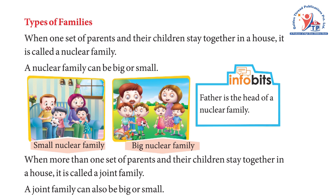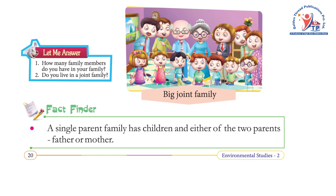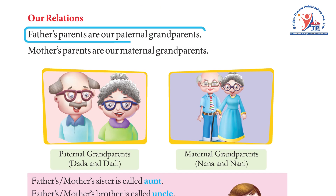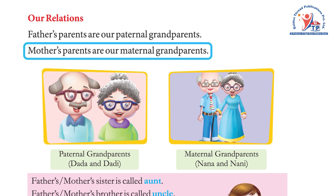Activity questions: one — how many family members do you have in your family? Two — do you live in a joint family? Fact finder: a single-parent family has children and either of the two parents — father or mother.